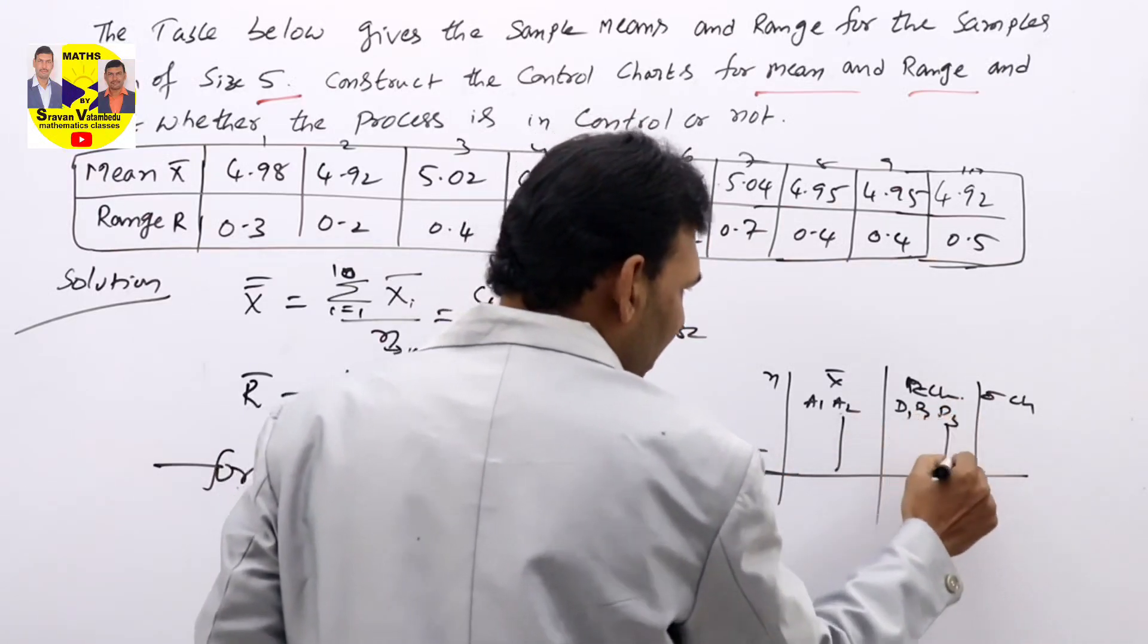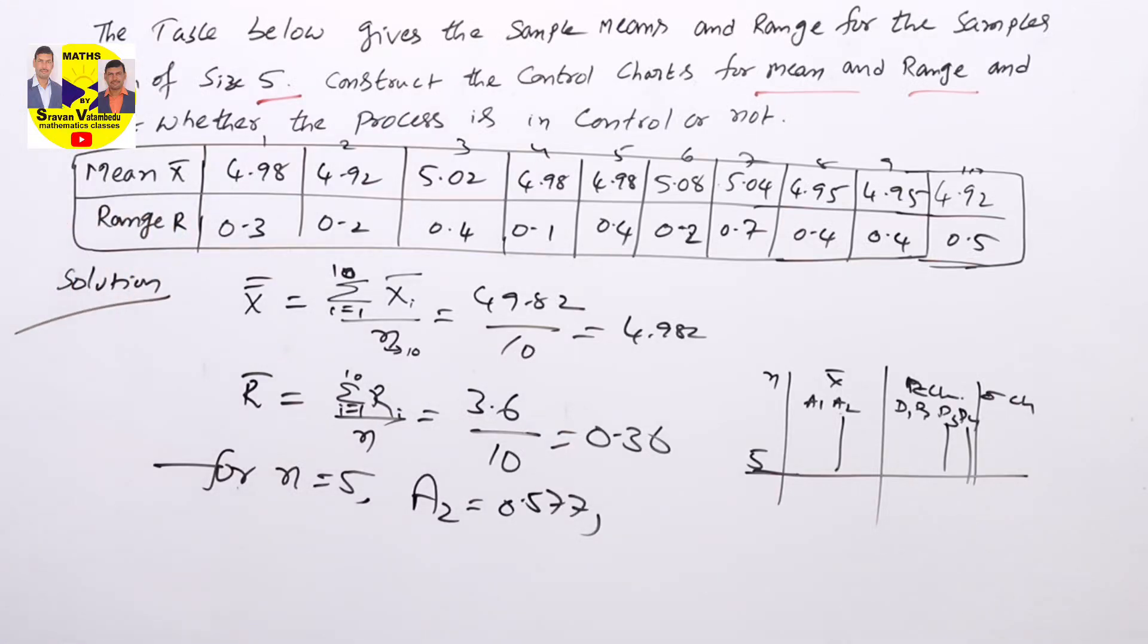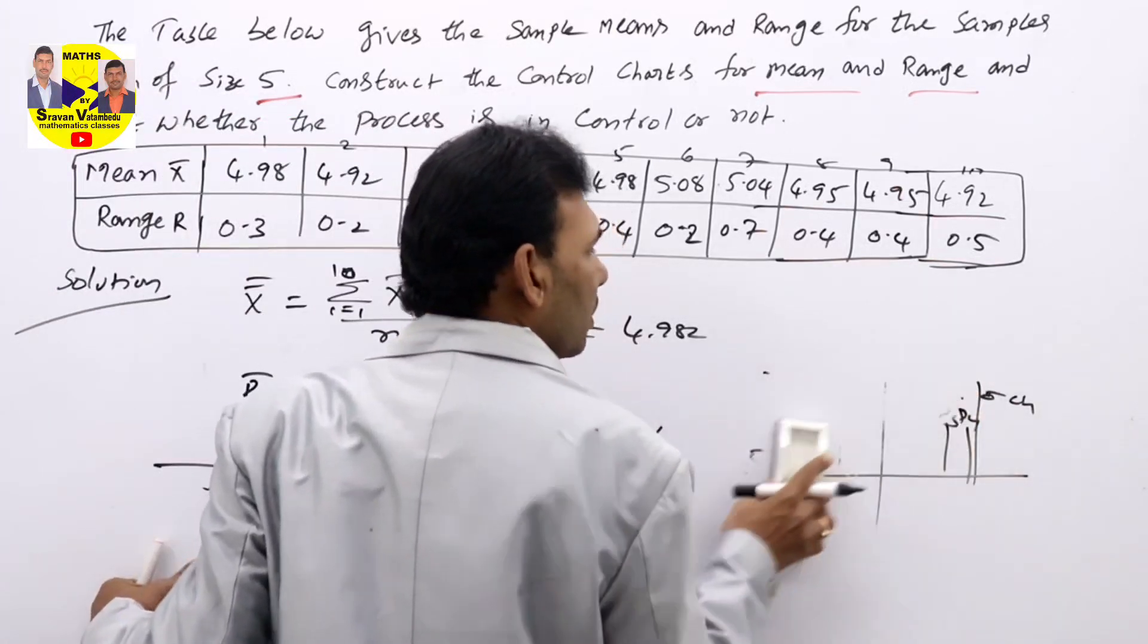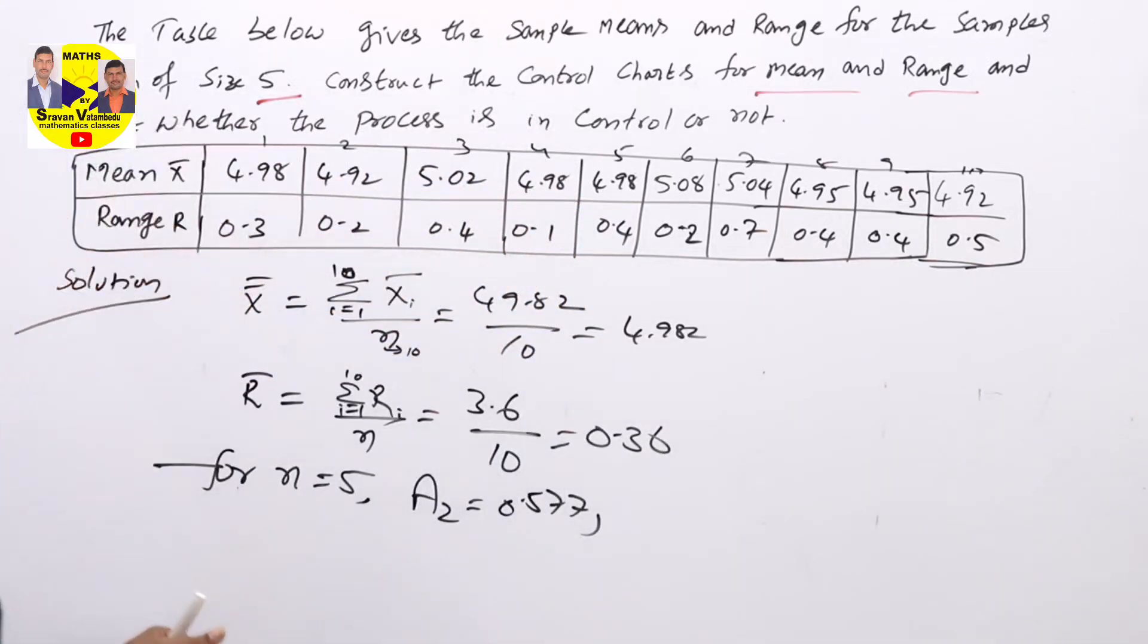In this line, A2 value, D3 value, D4 value I am going to use. That is the chart you will get in your textbooks. That table we are going to see now.